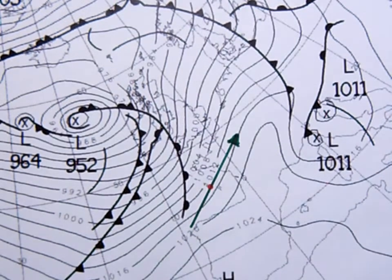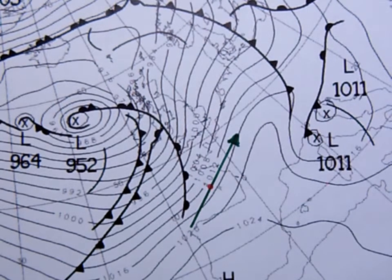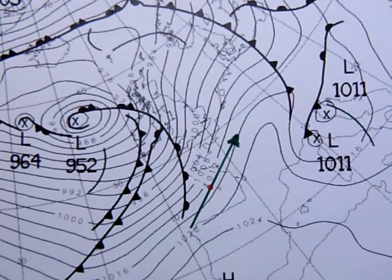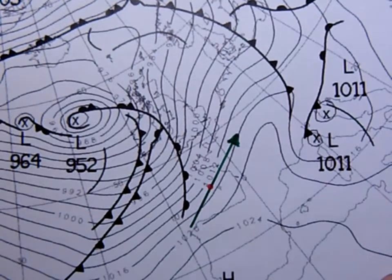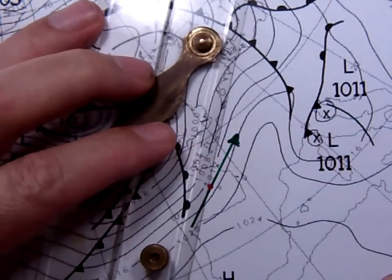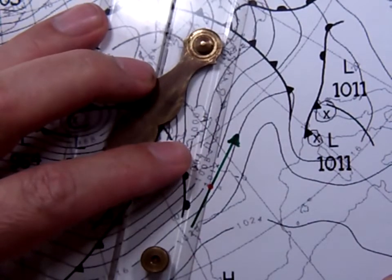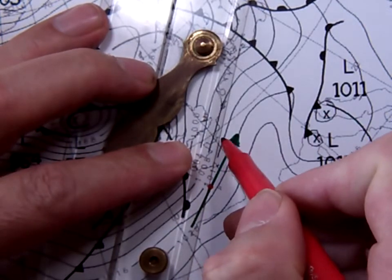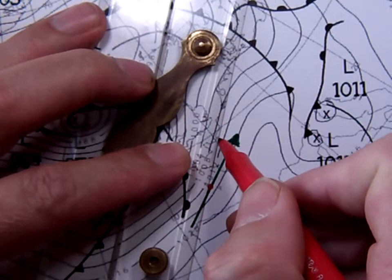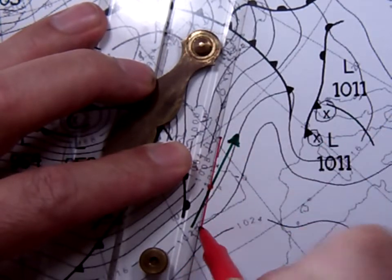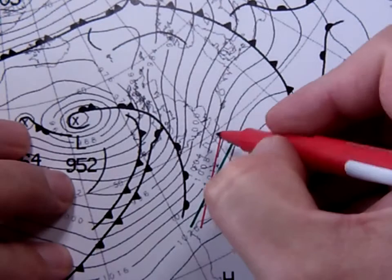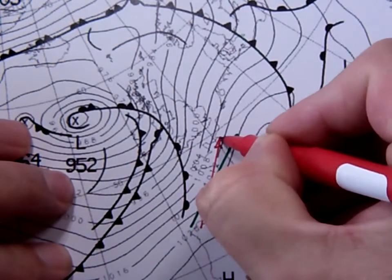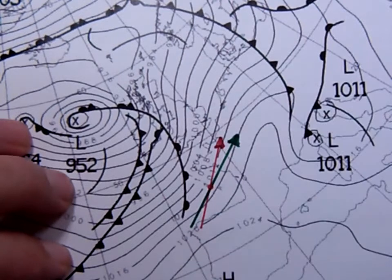At the surface however we approximate the inflow to be about 20 degrees over the sea. So what I'm doing here is drawing another line approximately 20 degrees towards the lower isobar, swivelling through my point. As this is an estimate of wind direction, you don't have to get a protractor out — you're just estimating 20 degrees. So that is the direction.